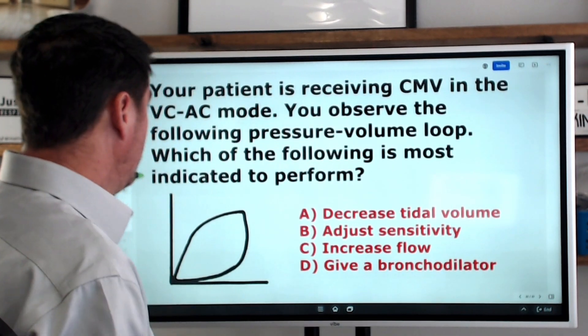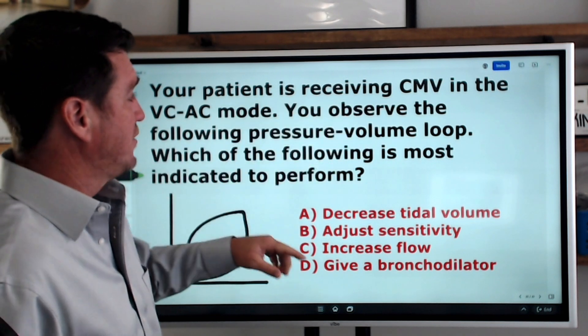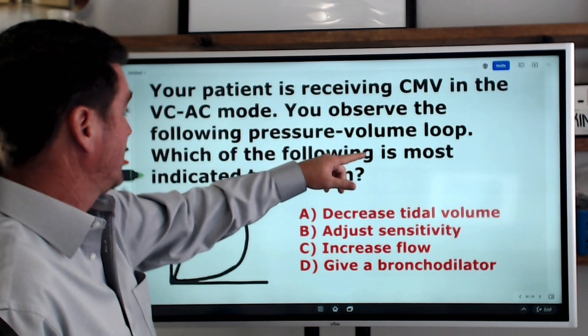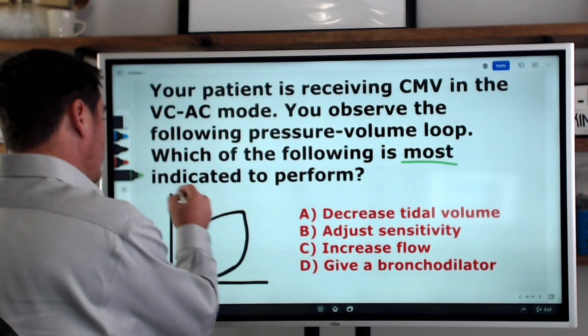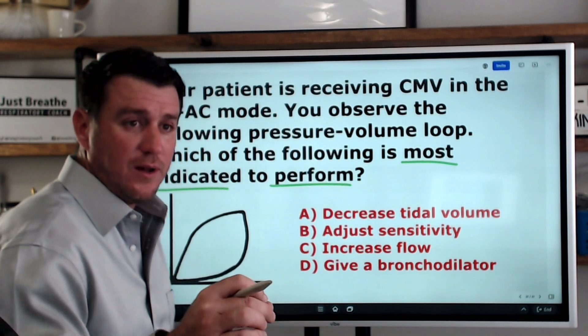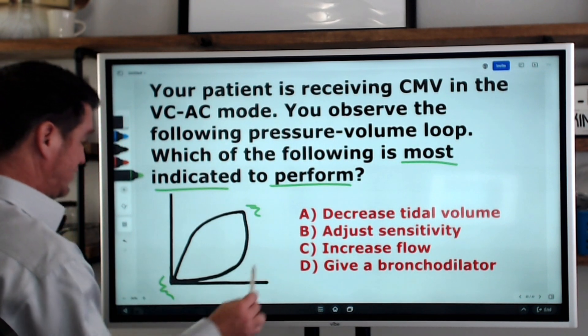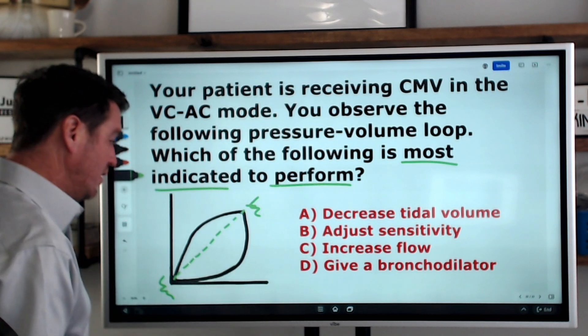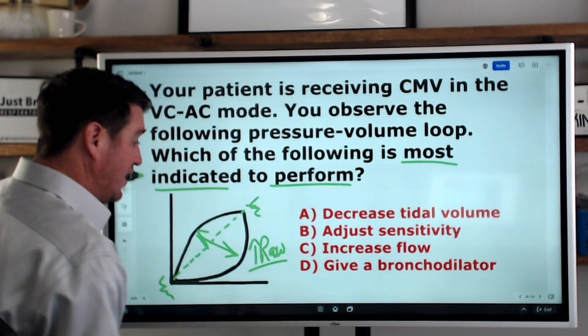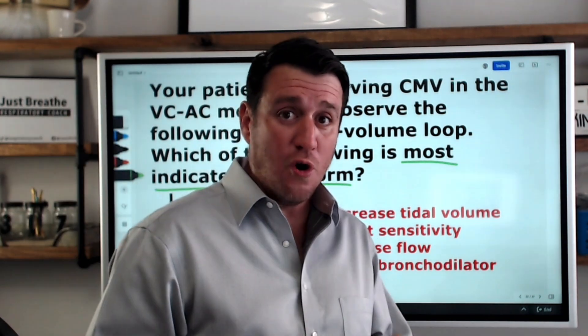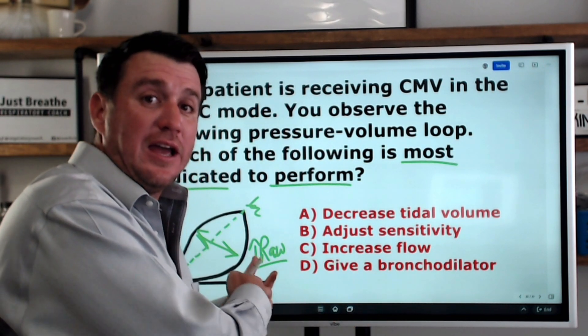Now again here, let's go to question number two. Feel free to pause this. Answer the question. Come back to it. We're going to go ahead and break it down. Your patient is receiving continuous mechanical ventilation in the VC AC mode. You observe the following pressure volume loop. Which of the following is most indicated to perform? Okay. So see, now we're being asked for the most indicated to do. See, they want us to do something now. So when we look at this, we don't see a bird beak. We don't see a fishtail. It looks like it's at about a 45 degree angle, but it does look more wide. So we're thinking increase in airway resistance. That's all we got to do now. We know what is being indicated now by the loop. Now let's go find the answer that solves an increase in airway resistance.